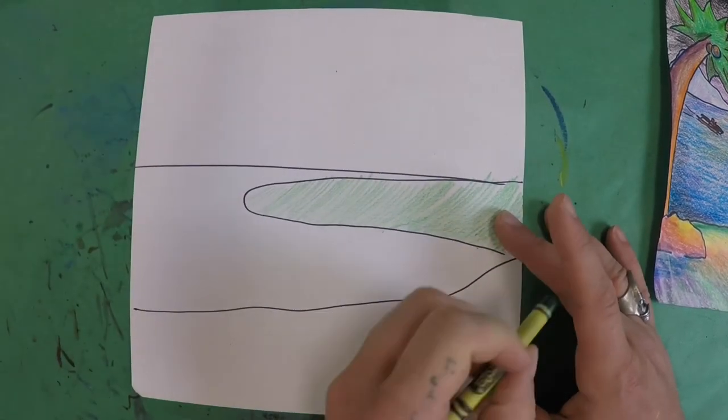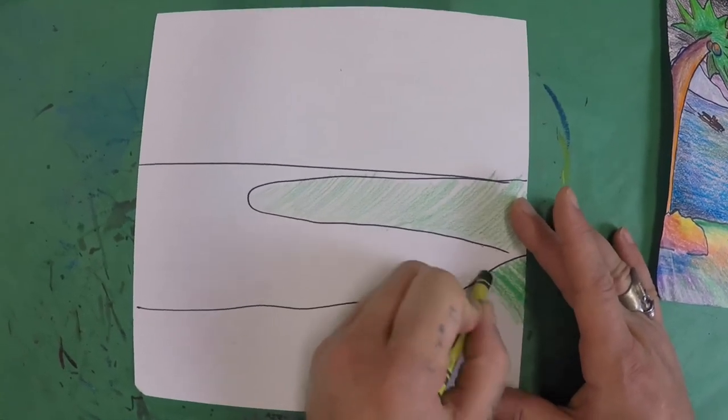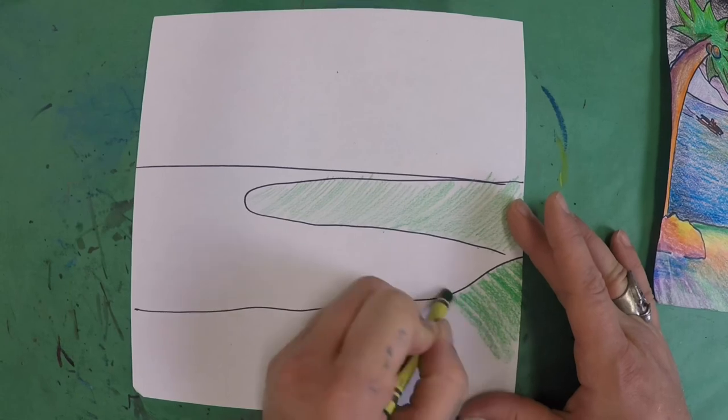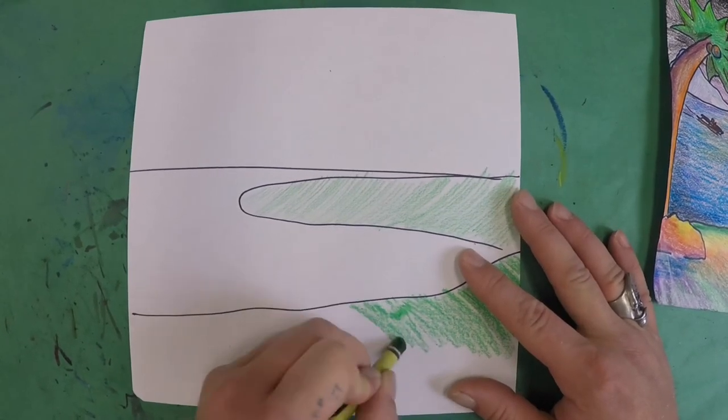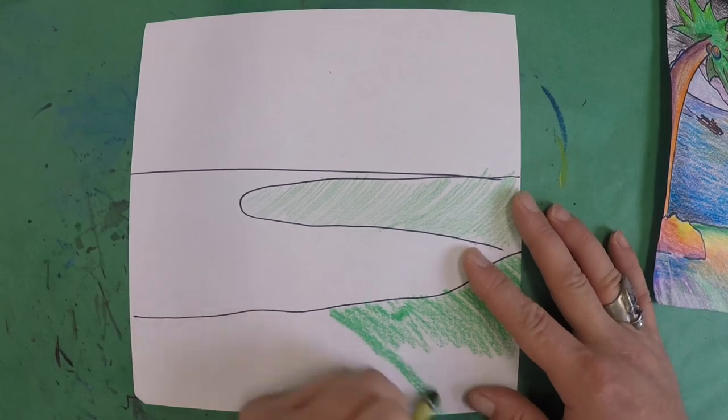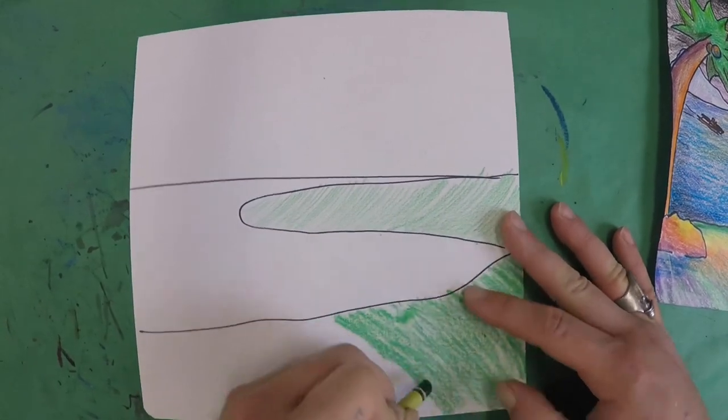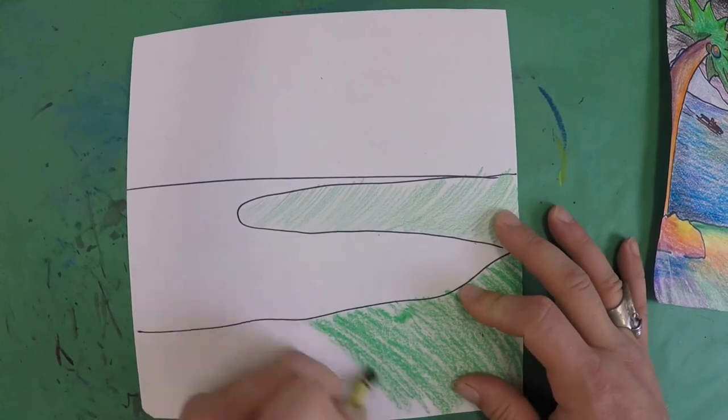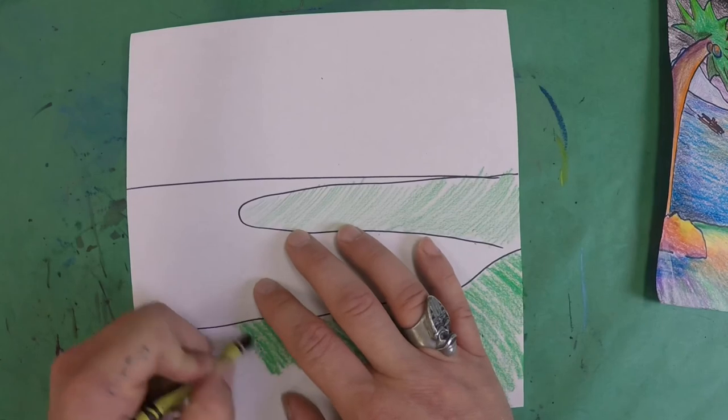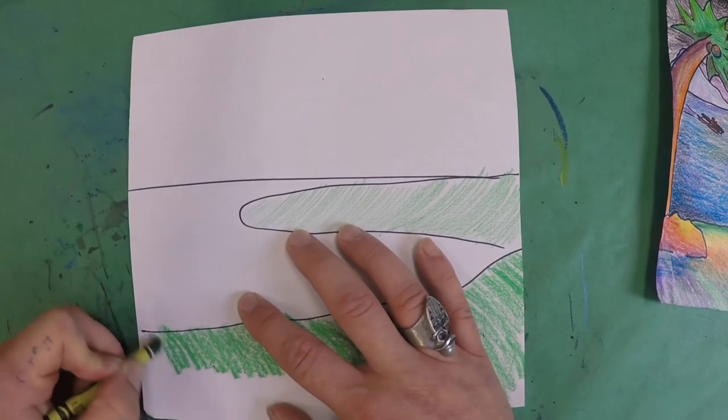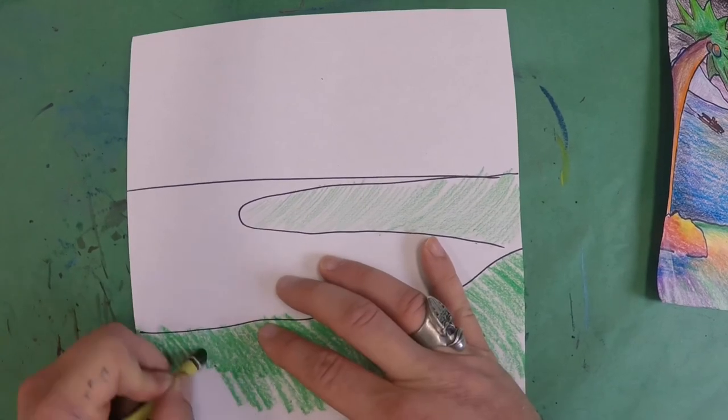Because when we color, that direction that we color, it shows up. People can see that. So if people can see it and if people are going to notice it anyways, we might as well use it to our advantage. We might as well make it work for us as an artist to help add to our piece and to help clarify the piece of artwork that we're creating.